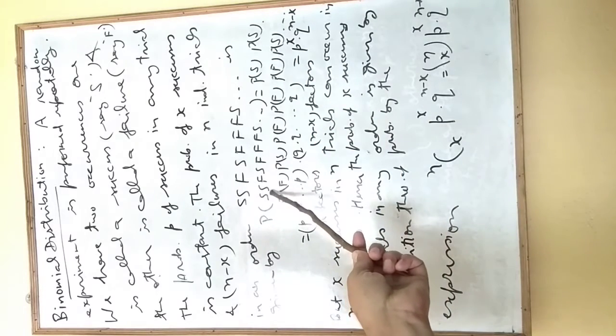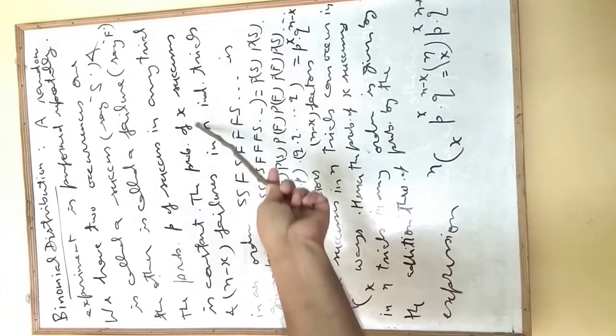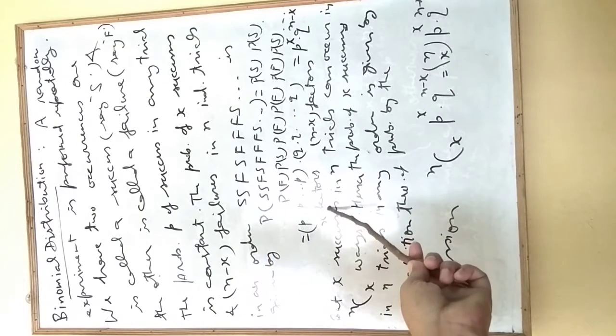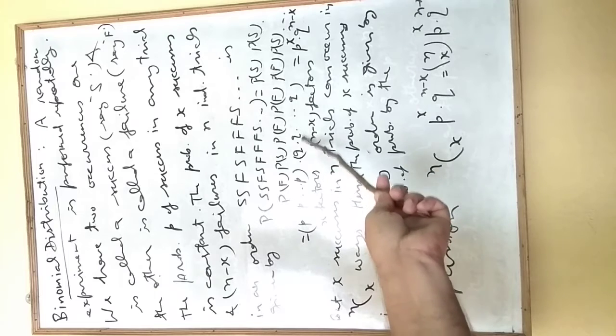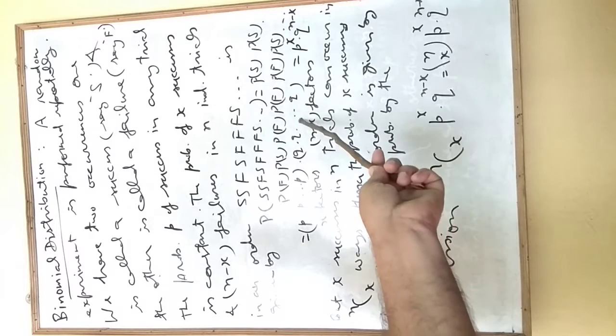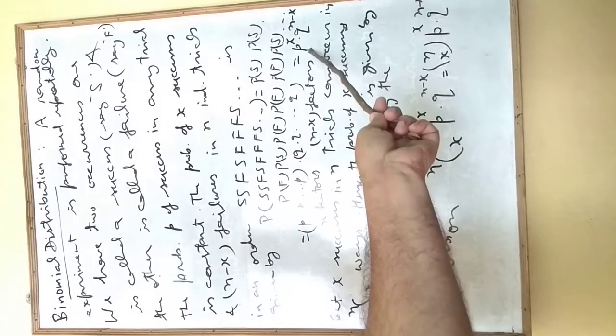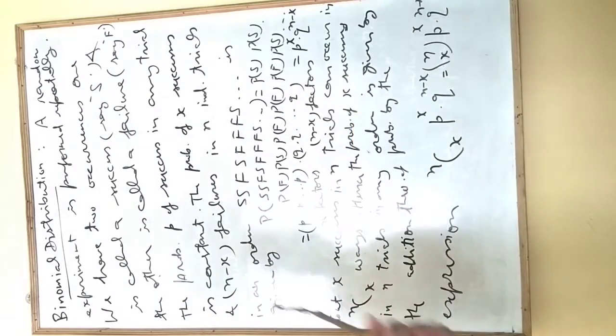It means we have S x times. So this p will be multiplied x times, so we will have x factors. And Q is multiplied n minus x times, so there will be n minus x factors. It means P to the power x times Q to the power n minus x.